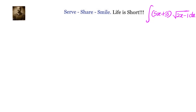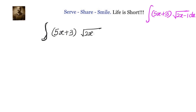We have to find out the integral of (5x + 3) into square root of (2x - 1). How do we solve this problem? If we don't have the square root, we can easily find out the integral. We have a problem with the square root, so let us try to eliminate it. We will take whatever is inside the square root and set it equal to another variable t.